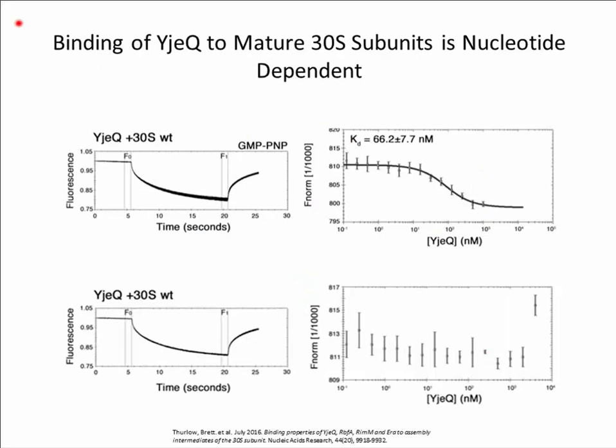To perform these MST experiments, we first fluorescently labeled our target — the 30S subunit — on cysteine residues using a red fluorescence dye. Next, we performed a serial dilution of our ligand, purified assembly factors, from high to low concentration. The labeled ribosomes were then added at a constant concentration to the serially diluted assembly factors, loaded into capillaries, and placed into the Monolith for MST analysis.